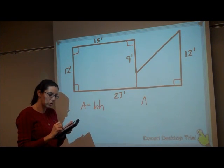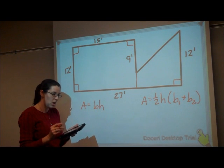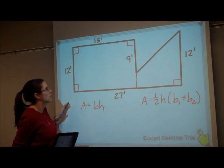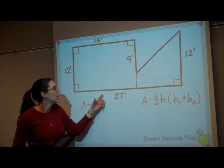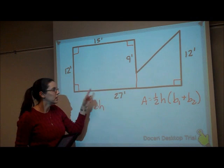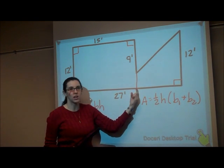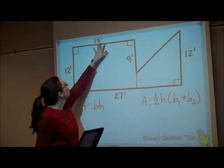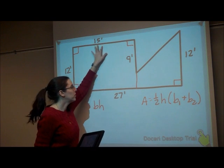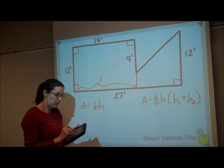For the trapezoid, it's 1 half times the height times the sum of the bases. Okay, so let's look at this for a second. My rectangle, I need a base and the height. This whole side is 27. I don't need all of that in my rectangle. My rectangle is only going to here. So for my base, I need to go up here and use the 15 because this part would be 15.